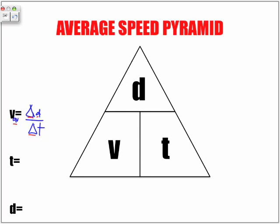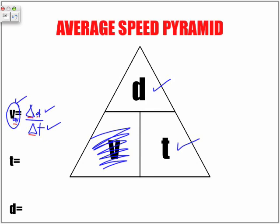If we look at what this question is asking us, it's asking us to find our speed, our V value. So how do we use the pyramid? Whatever you're trying to find — if we're trying to find V — cover up V. And what we have is D on top of T, and that translates to D divided by T. Notice how D is on top of T, just like it is in this pyramid.